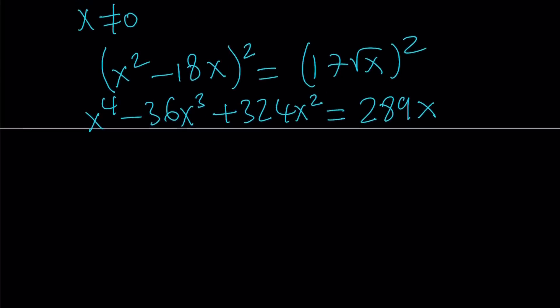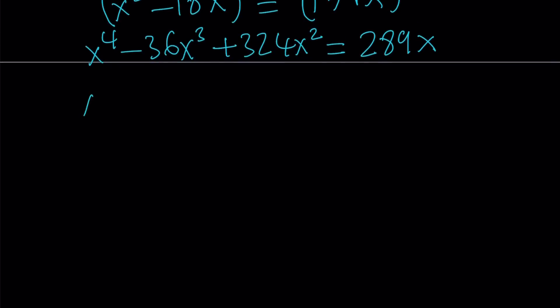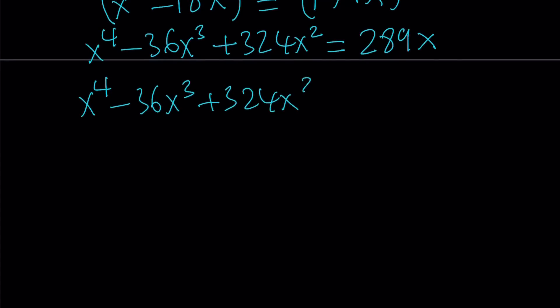Now let's put everything on the same side and write this as a quartic equation. Now we have this expression minus 289x, and the whole thing is equal to 0.